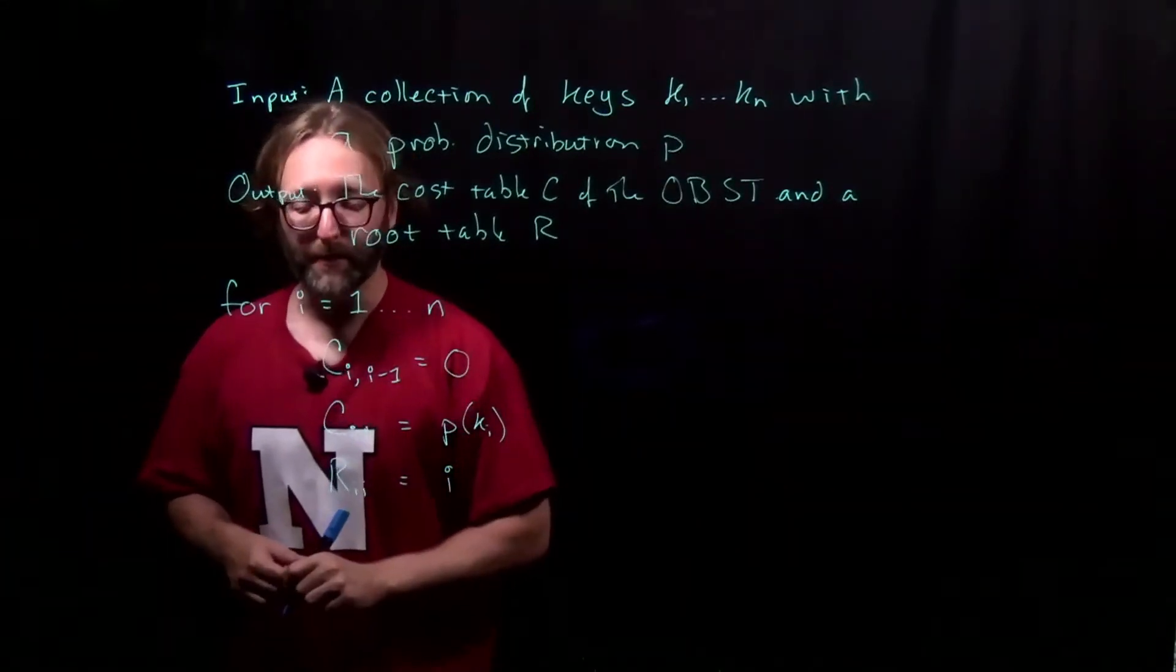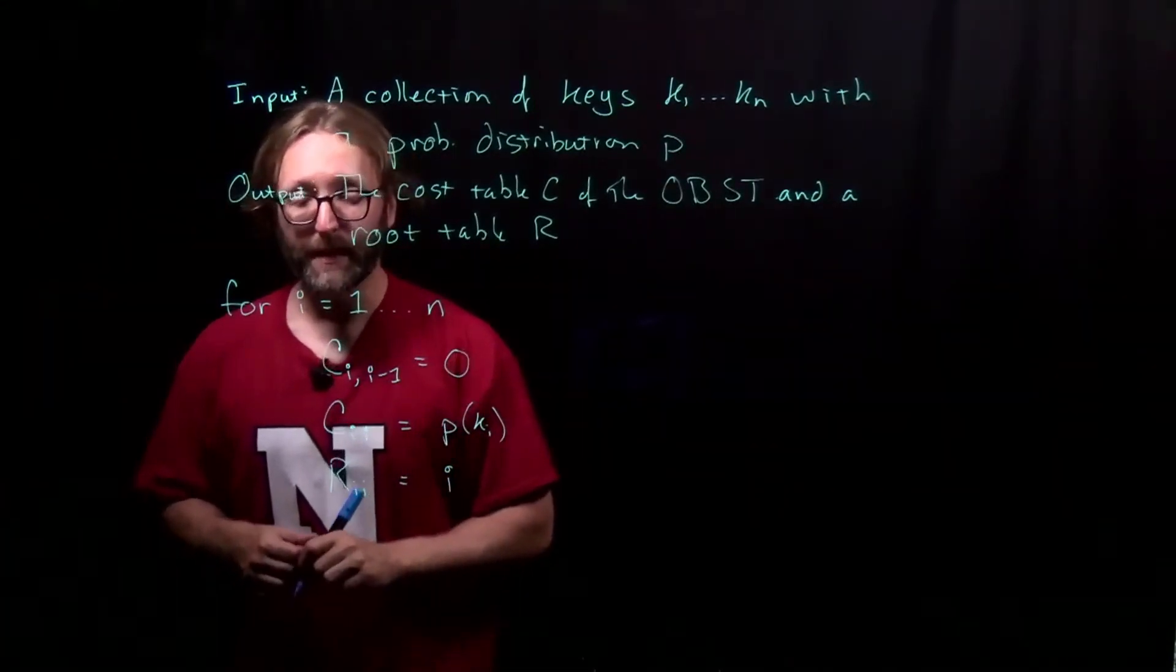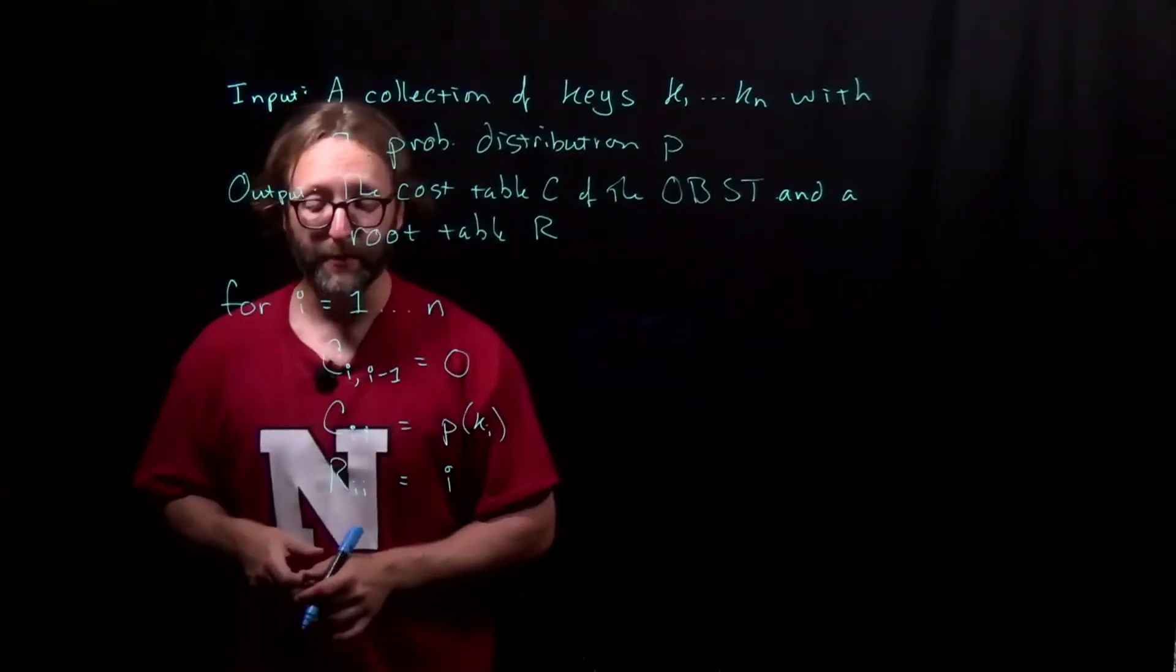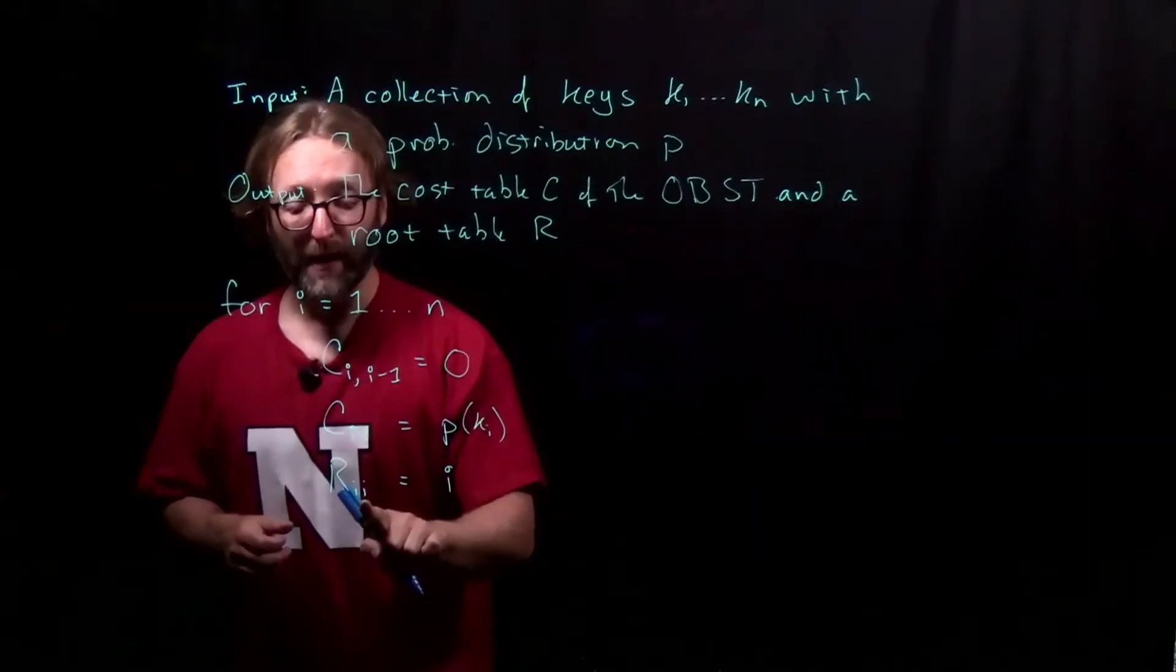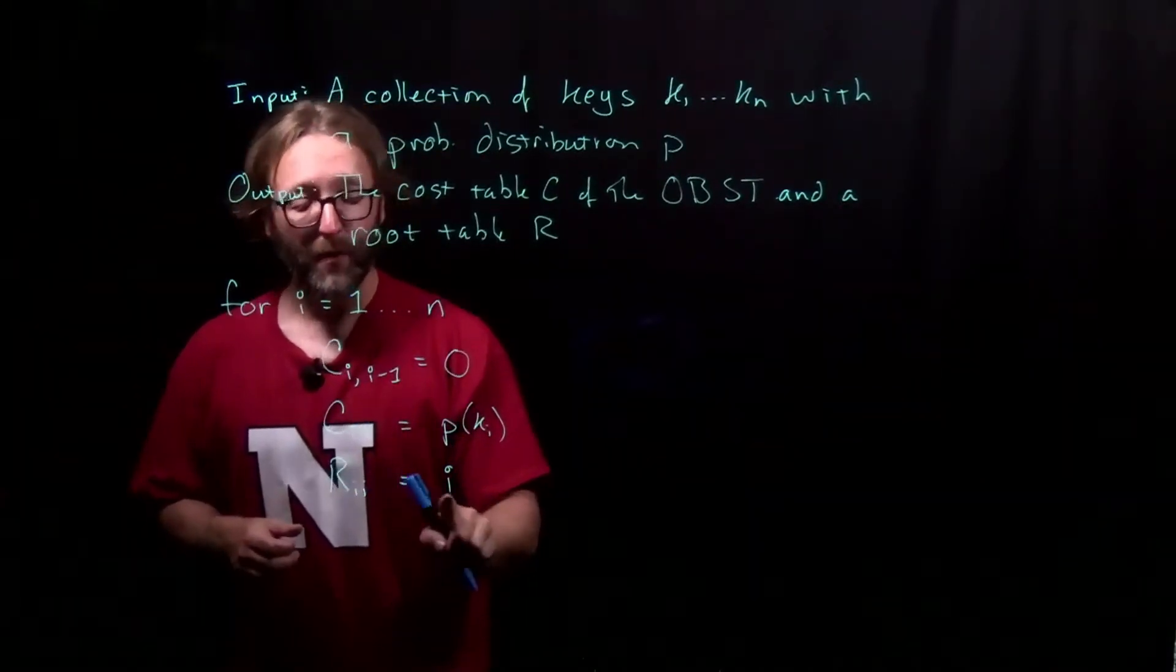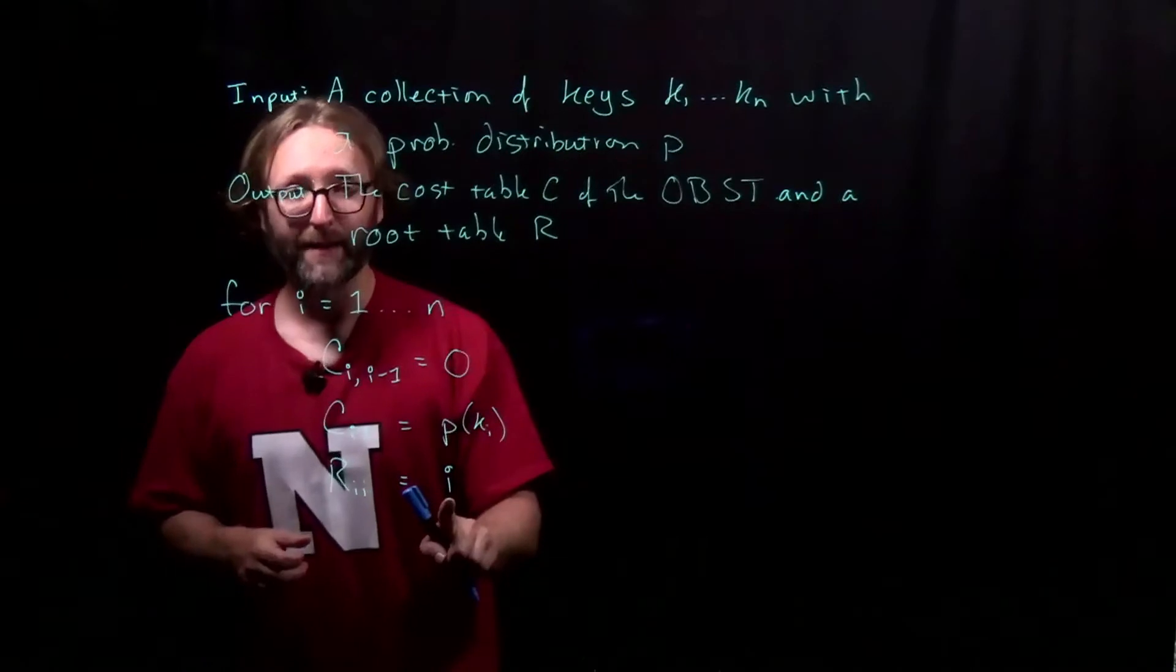This will be our root table. It'll tell us the key that we need to use as a root for that particular tree. If we have a tree involving keys ki through ki, in other words just one key, well then we only have one choice, the ith key.